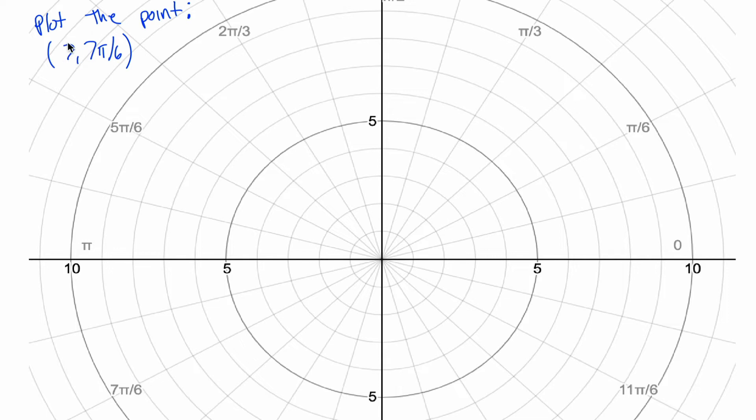What this is saying is I want to travel a distance of 7 in the direction 7 pi over 6. 7 pi over 6, as we've seen in our class, we start from the positive x axis and measure counterclockwise. Pi is halfway around the circle, so that's here. 7 pi over 6 is this little bit past there. The fact that our second coordinate is 7 pi over 6 tells us we want to be traveling in this direction here. How far do we want to travel? We want to travel a distance of 7. Well, let's see. Here would be a distance of 5, so there's 6 and there's 7.